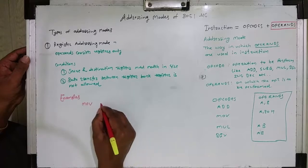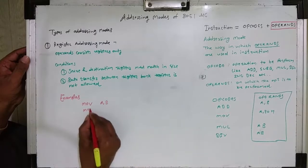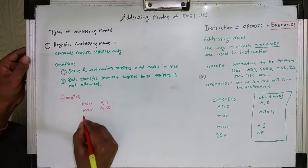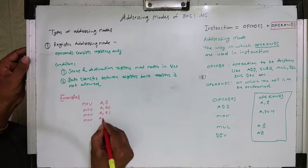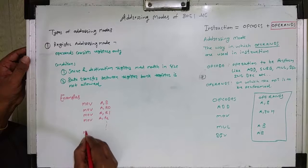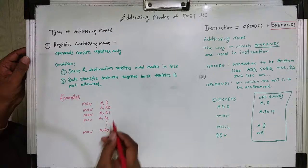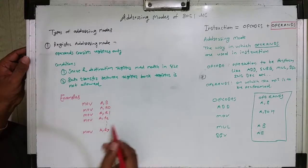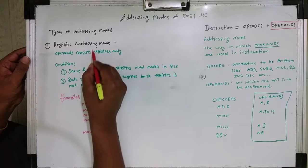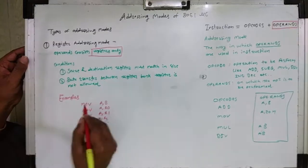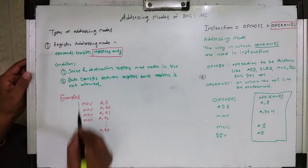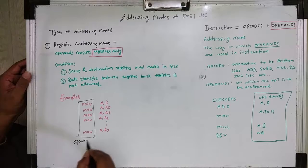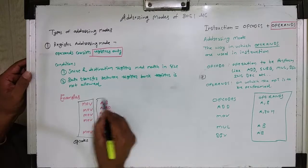Let's have some examples. For instance, MOV A,B — this is register addressing mode, so the operand consists of registers only. Both source and destination registers are 8-bit registers. MOV is the operational code and A,B are the operands.